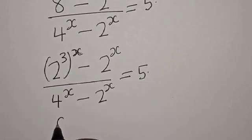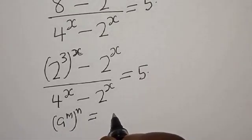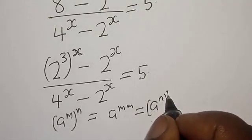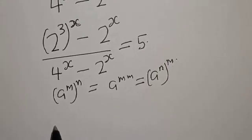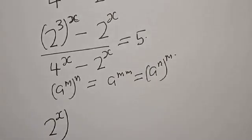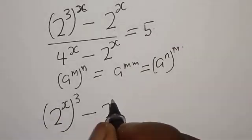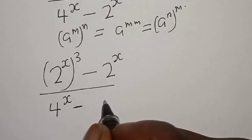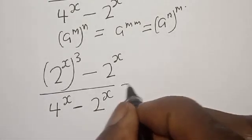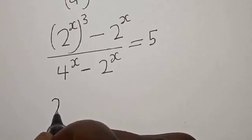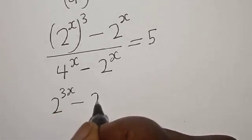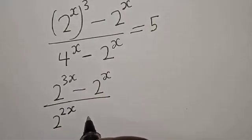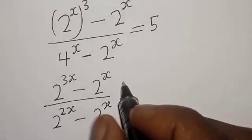Now remember the exponent rule: A to the power N to the power M equals A to the power N times M. Applying this, 4 raised to the power x becomes 2 raised to the power 2x. So we have 2 raised to the power 3x minus 2 raised to the power x, divided by 2 raised to the power 2x minus 2 raised to the power x, is equal to 5.